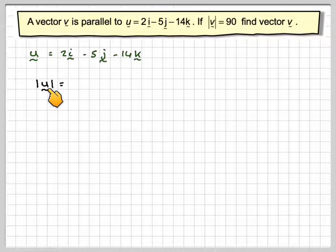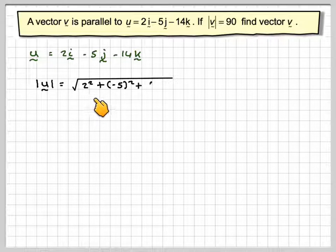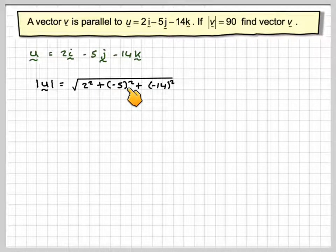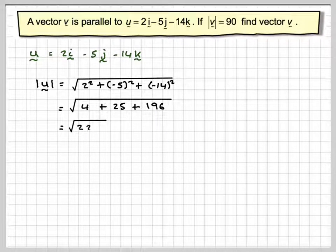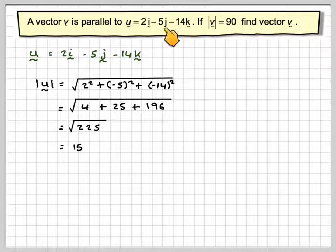So the magnitude of this particular vector is going to be the square root of 2 squared plus minus 5 squared plus minus 14 squared, which is going to give me 4 plus 25 plus 196, which gives me the square root of 225, which is 15. So this vector here has a length of 15.